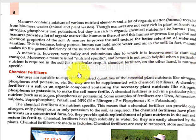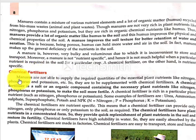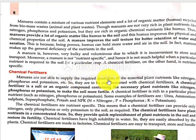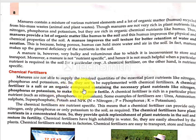Chemical fertilizer, on the other hand — we need to know that the nutrients are able to supply the required variety of essential plant nutrients like nitrogen, phosphorus, potassium, etc. They can provide all of the required nutrients. We need chemical fertilizers.